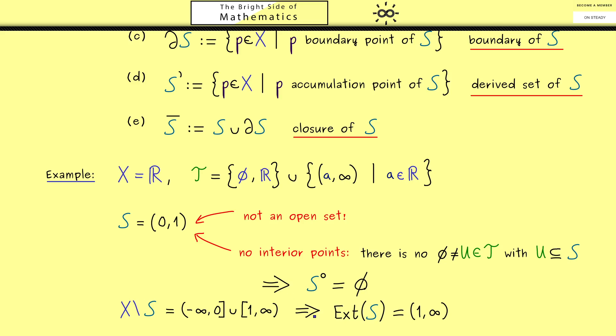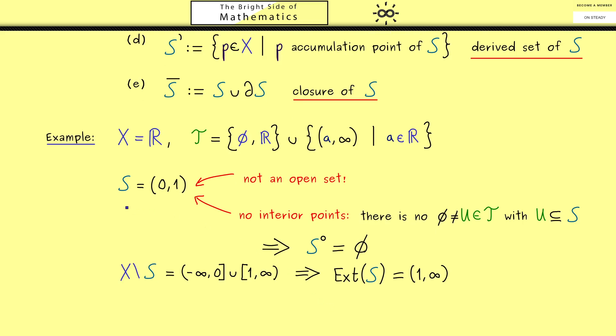Now with the knowledge of these two sets, we immediately know all the boundary points of S. There please recall, these are all the points in X that are neither in the interior of S nor in the exterior of S. Hence, it's the interval from minus infinity to 1, including the point 1.